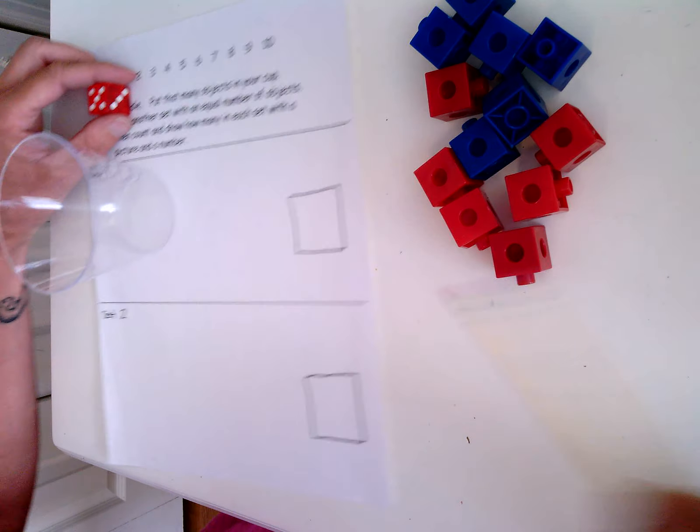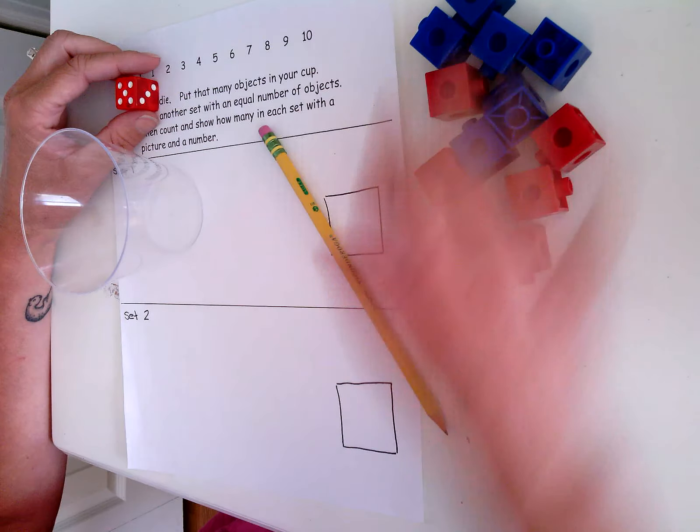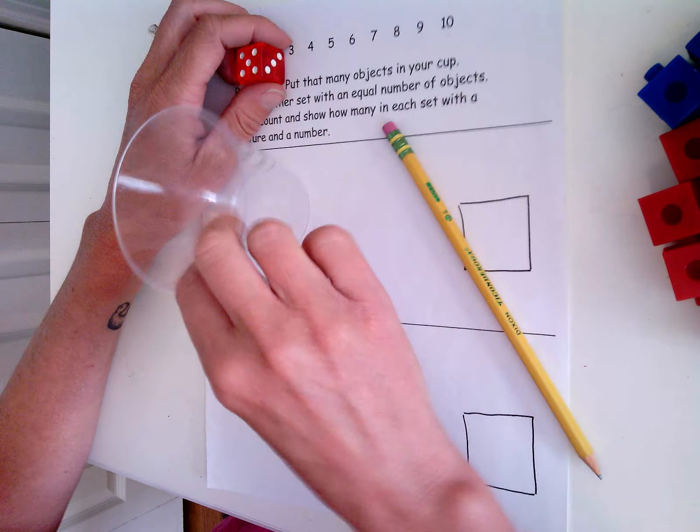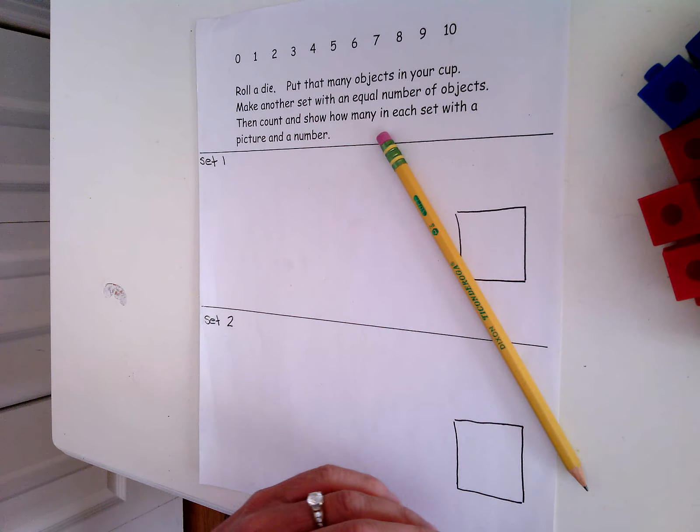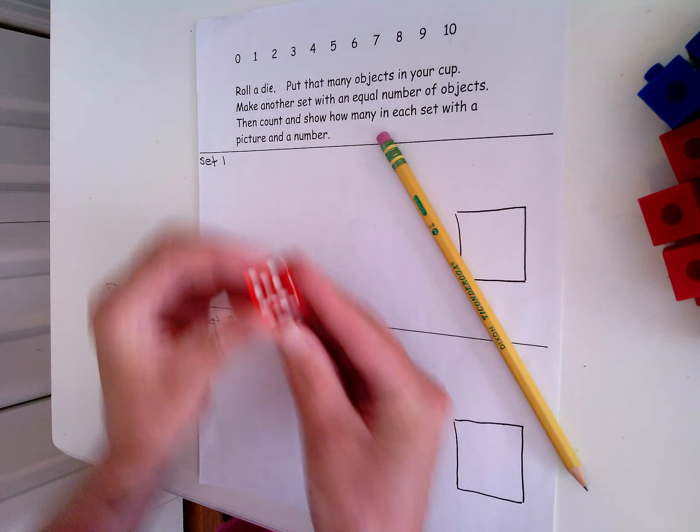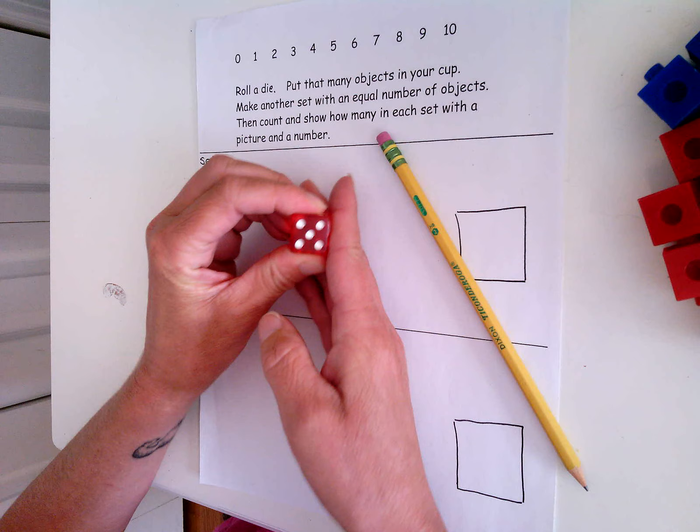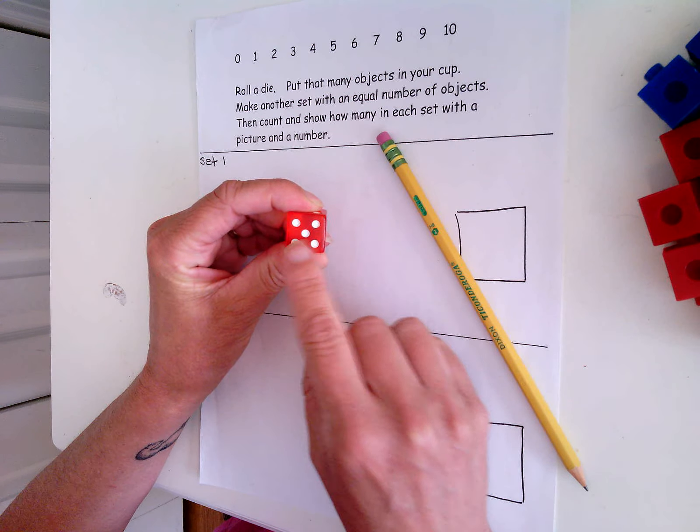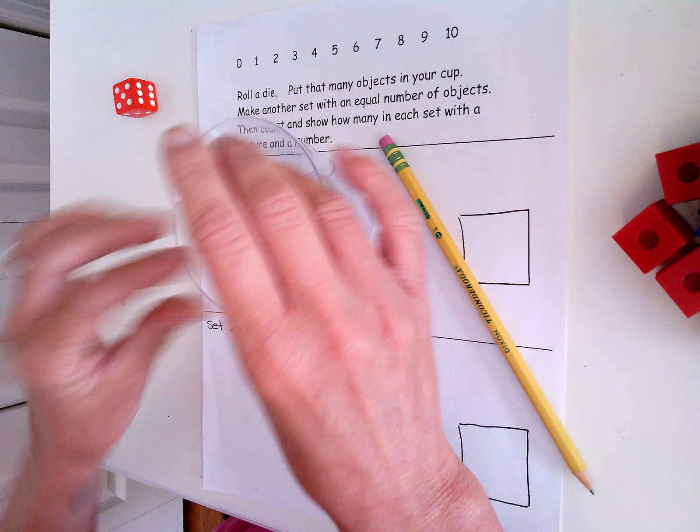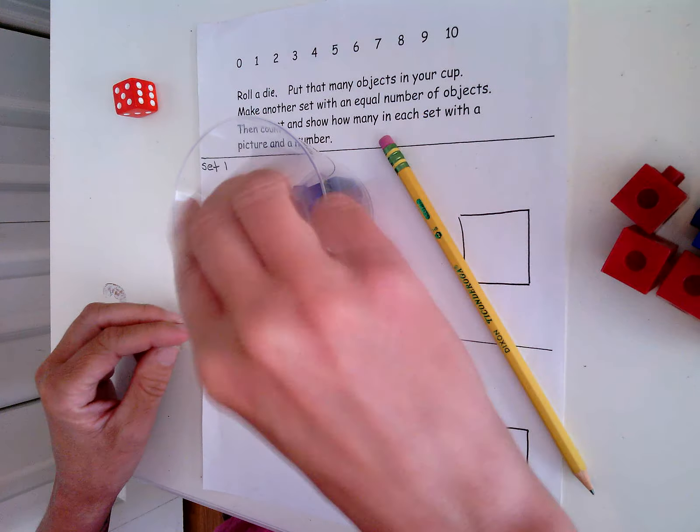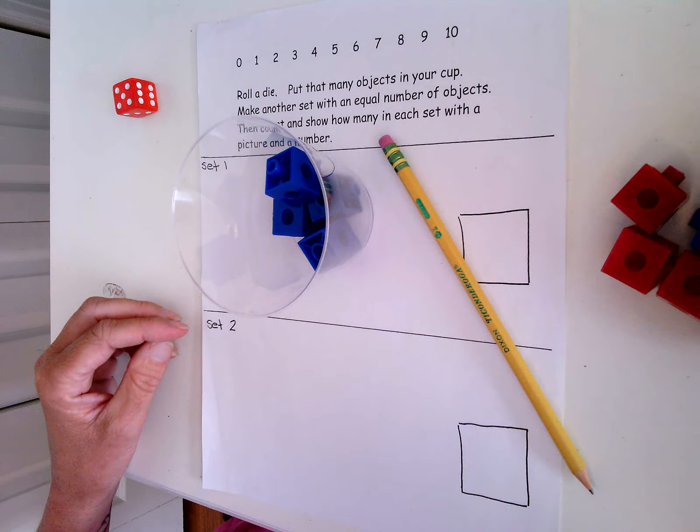So you're going to roll the die, and I got a five. I'm going to put one, two, three, four, five in my cup. So I roll a die, I put that many objects in your cup.